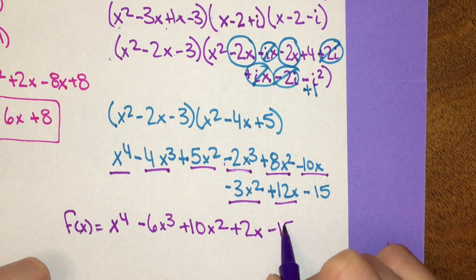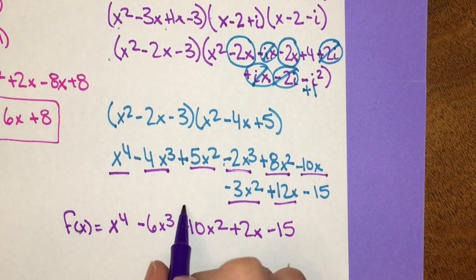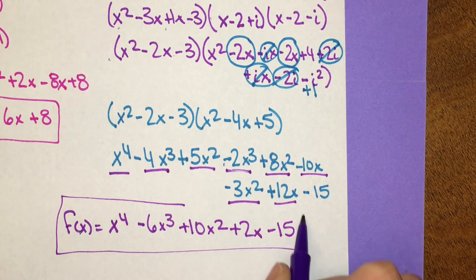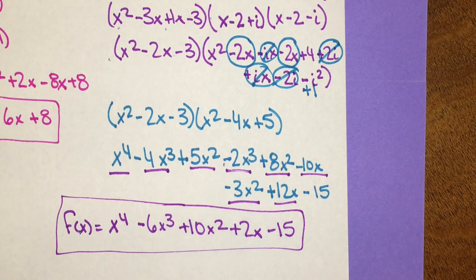So f of x equals x to the 4th minus 6x cubed plus 10x squared plus 2x minus 15. That's our final polynomial function.